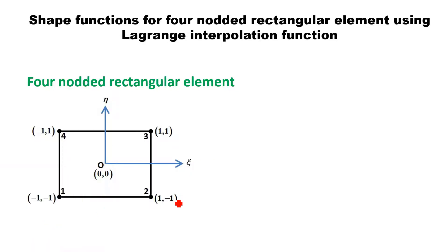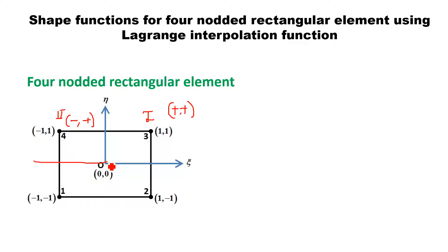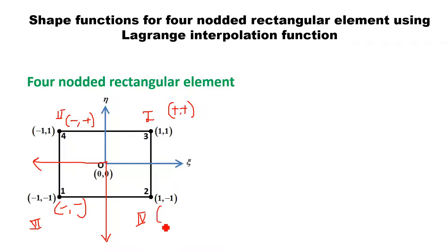Using these sign combinations and the important property of natural coordinates that the maximum coordinate value is unity: in the first quadrant, the signs will be plus-plus; in the second quadrant, minus-plus; in the third quadrant, minus-minus, because XI is minus and eta is minus; and for the fourth quadrant, the sign conventions will be XI plus and eta minus.